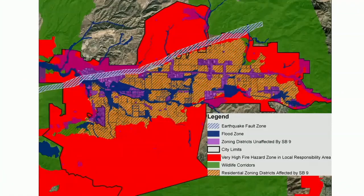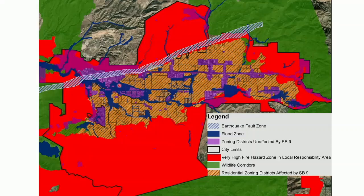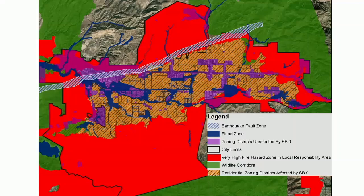This exhibit shows the areas of the city where development could be impacted or restricted. The white striped line running along the northern edge of the city is the Alquist-Priolo fault zone. The purple areas are zones where residential is not permitted. The blue is the 100-year floodplain, red is the very high fire hazard area, and the green are the wildlife corridors. The orange striped area on the map shows portions of the city where SB9 development could be allowed. Special hazard areas are eligible for SB9 development but must meet a higher standard for safety and be reviewed by the directors of public works and environmental services.